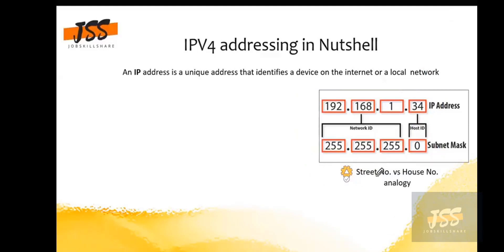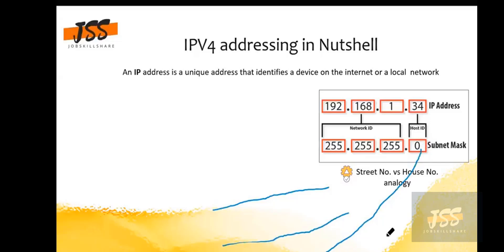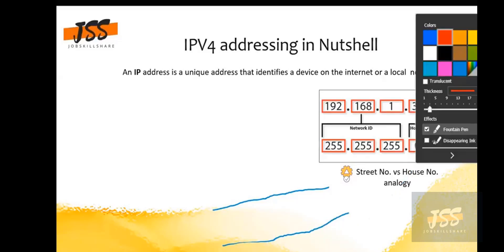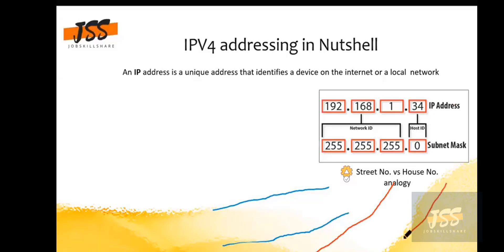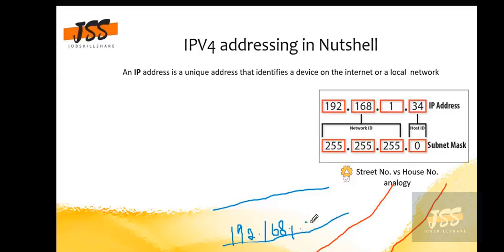I've mentioned here the street number versus house number analogy. Let's draw it so you have a better understanding. We have two streets. This street will have the address — let's suppose the street has the address 192.168.1.x. So this is the address of the street.